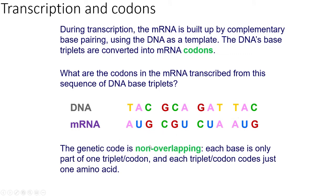Why we're looking at this now is to point out that the genetic code is non-overlapping, and that'll be really clear when you look at translation. What it means is each base is only part of one triplet and codon — each base is used once. So if this is the codon AUG, when the tRNA molecule is used in translation those three bases are used once. The next codon will be CGU, then CUA. If it were overlapping — which it isn't — the first would be AUG and the next would be UGC. That doesn't happen, as you'll see in more detail when we look at translation.